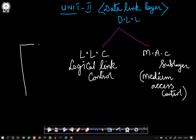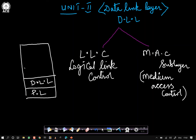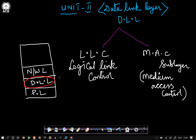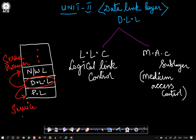In the OSI reference model with its seven layers, the bottommost is the physical layer, above that is the data link layer, and above the data link layer is the network layer. As per the convention, the data link layer becomes a service provider to the network layer, and it is a service user of the physical layer.